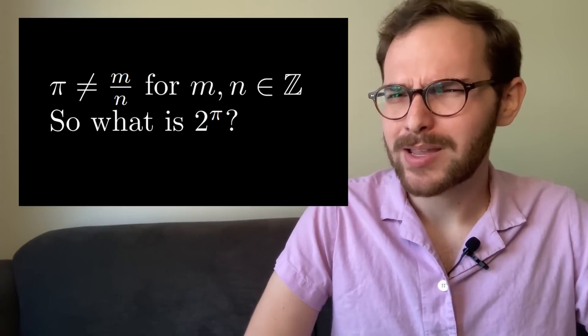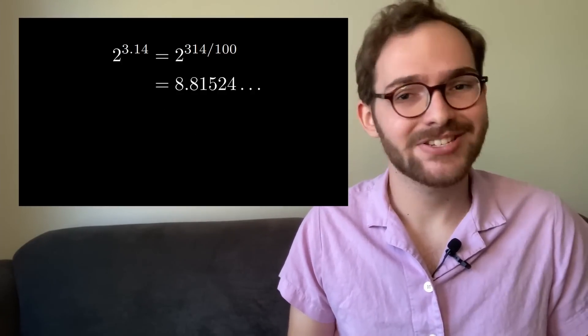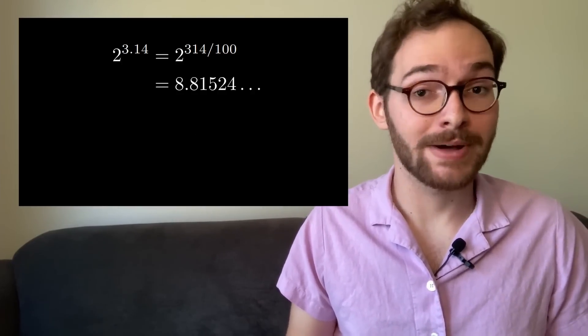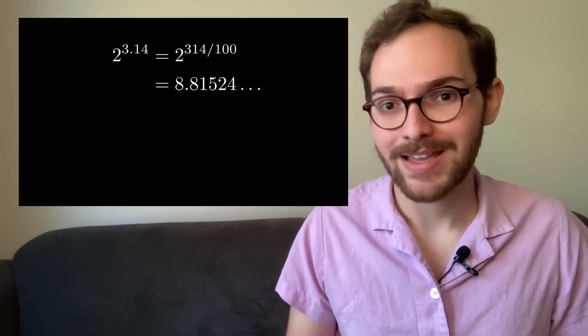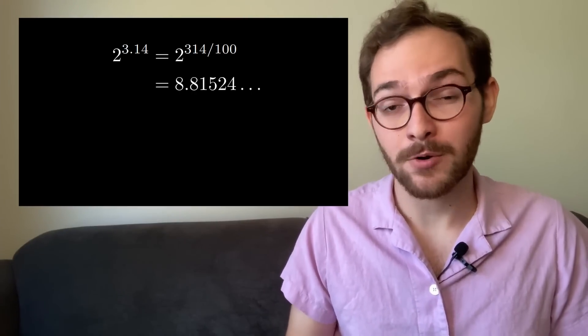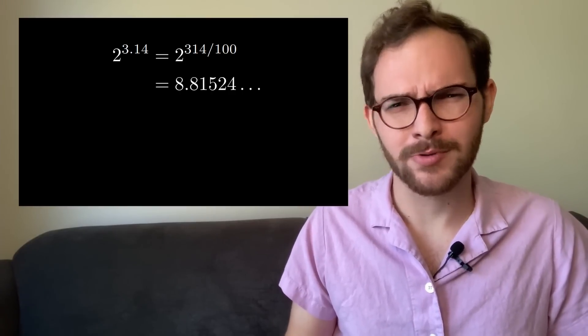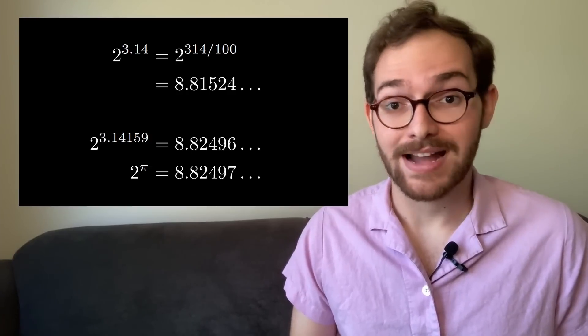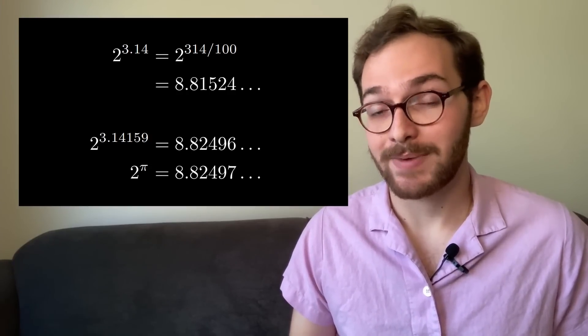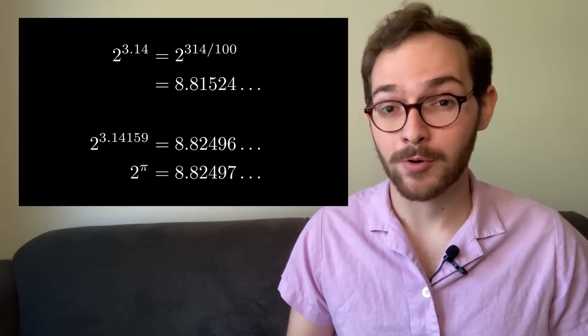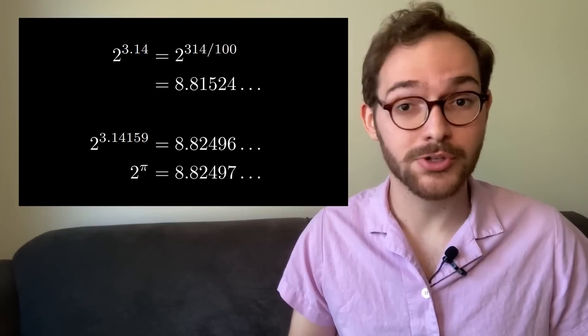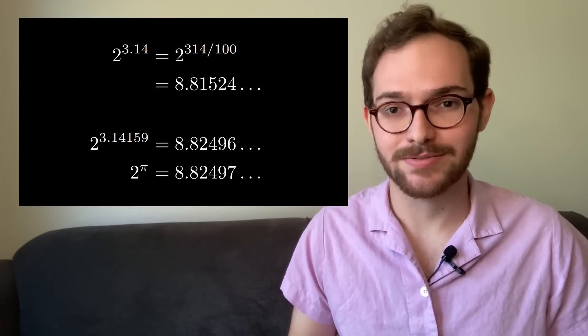Well, what if we want to compute it anyway? Your first instinct might be to say, okay, let's just take a rational number really close to pi, like 3.14, and find 2 to the 3.14, because that's just the 100th root of 2 to the 314. And if I want to be more accurate, I'll just use more digits of pi. 2 to the 3.14159 is even closer to what the calculator says is 2 to the pi.